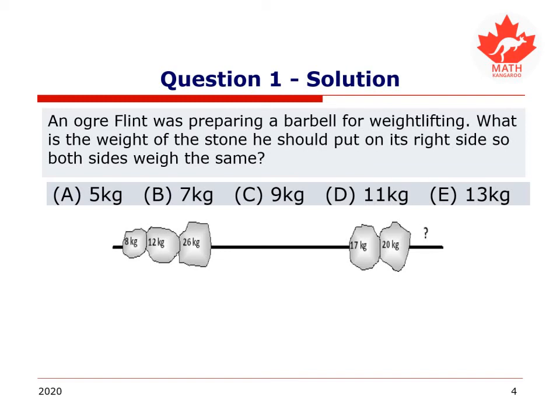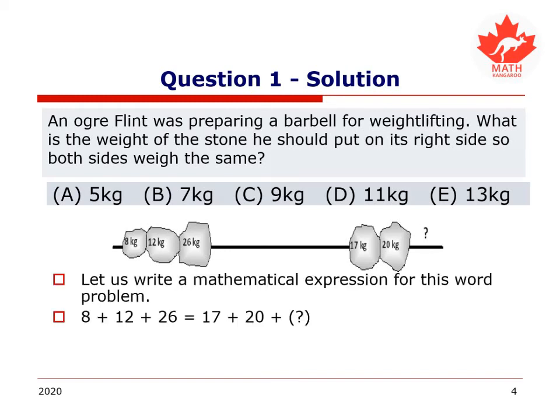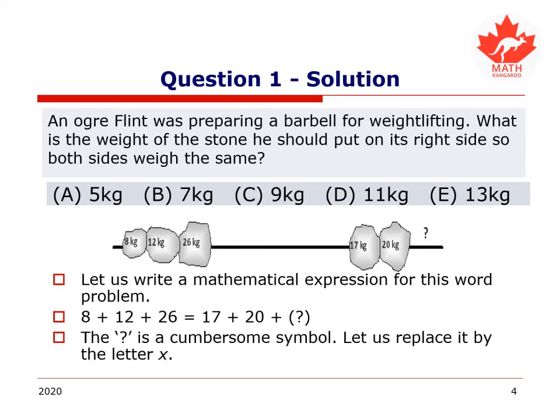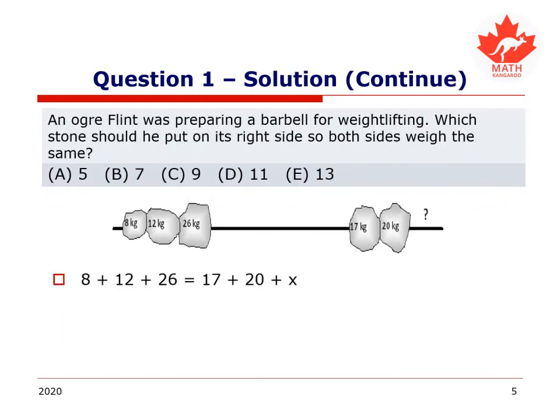Let's solve this together now. Let's write a mathematical expression for this word problem. On the one hand, we have that 8 plus 12 plus 26 has to equal 17 plus 20 plus unknown question mark. The question mark is quite a cumbersome symbol. Let's replace that with x. We're more used to that anyway. Here is our equation. We would like to have x by itself on one side of the equation. That way we'll know what it equals.